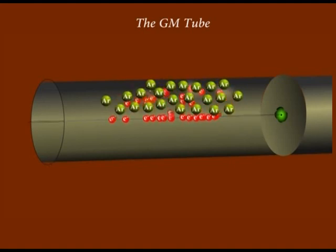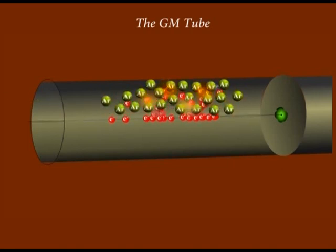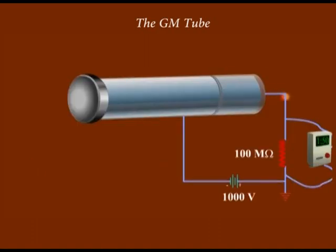The charge migration in the tube leads to a reduction in the potential of the anode and an increase in the potential of the cathode, either of which may be detected as a signal by the detector electronics.